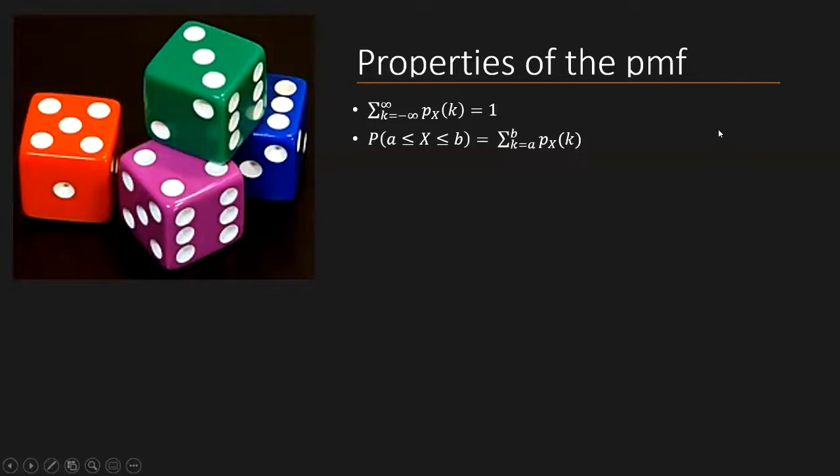The second property here is related to a range. So here on the left side, we have the probability that the value of X is within this range. So it's lower bounded by A, and it's upper bounded by B. So we basically want the probability that X takes any value inside of this range. And that can also be expressed by a sum. But now we have replaced the limits of minus infinity and plus infinity with the lower and upper limits of this range that we're interested in calculating.